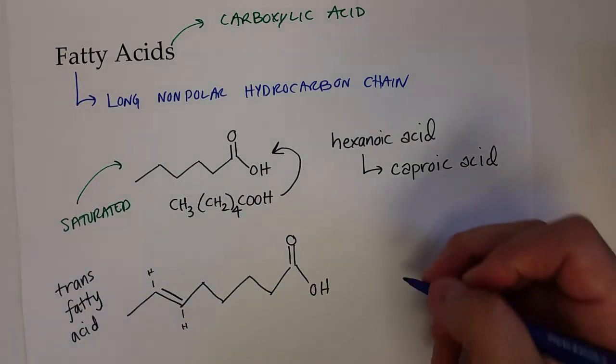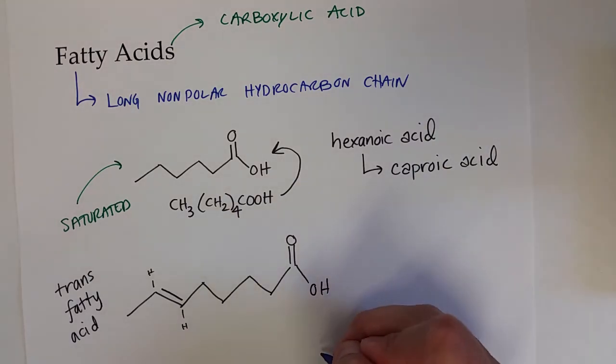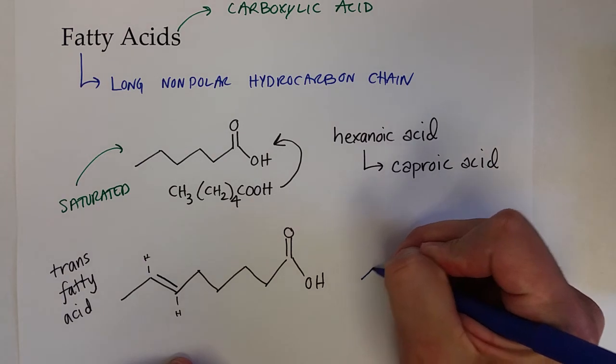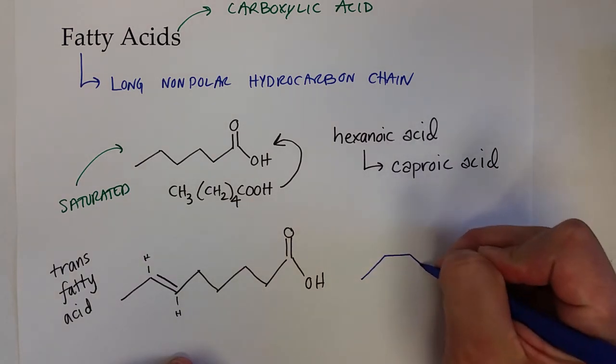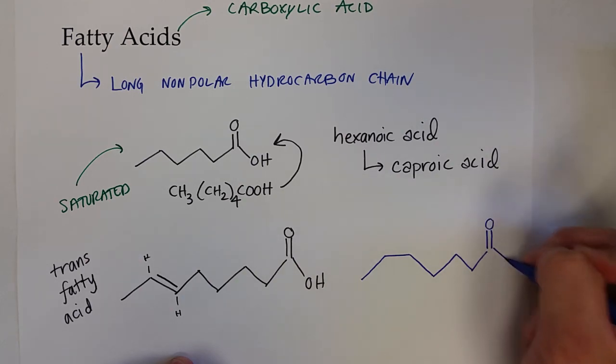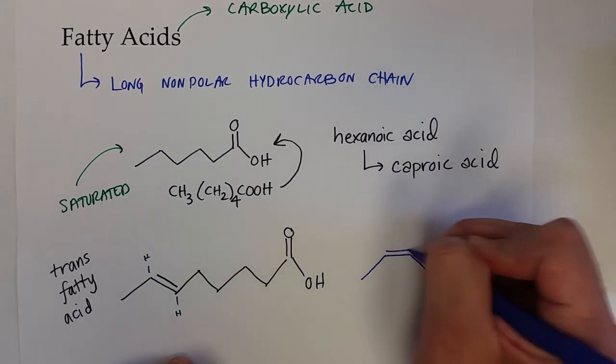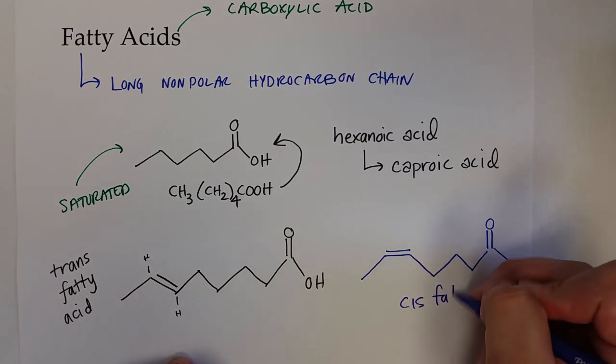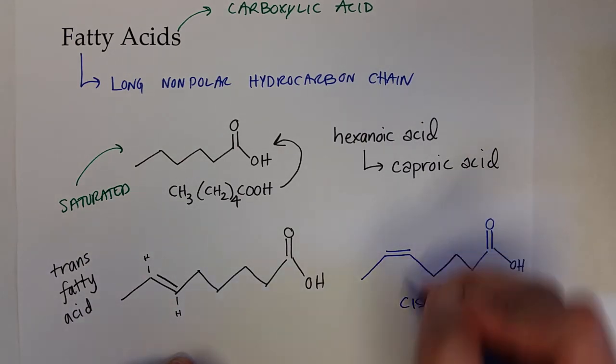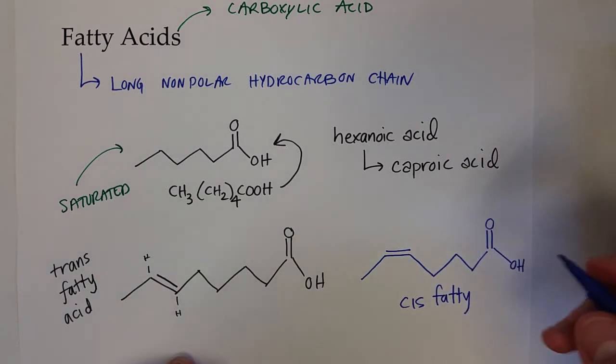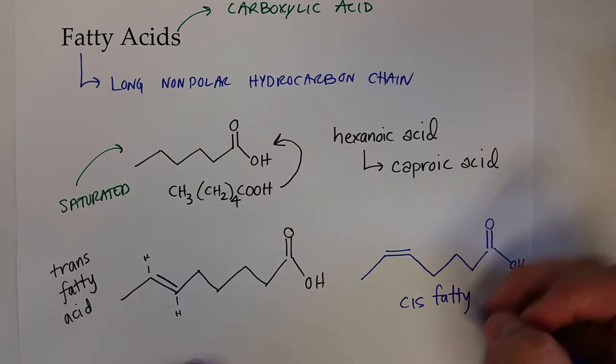And then of course, I could draw another one. And now I've drawn a cis fatty acid because of that double bond is in the cis position, or the cis isomer of that double bond is what I've drawn.